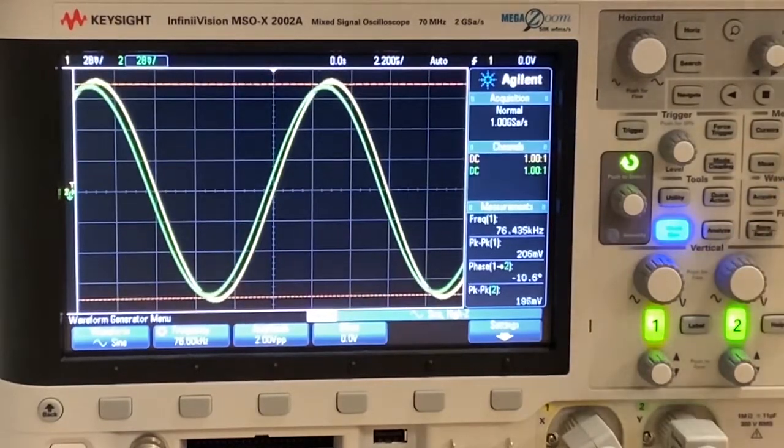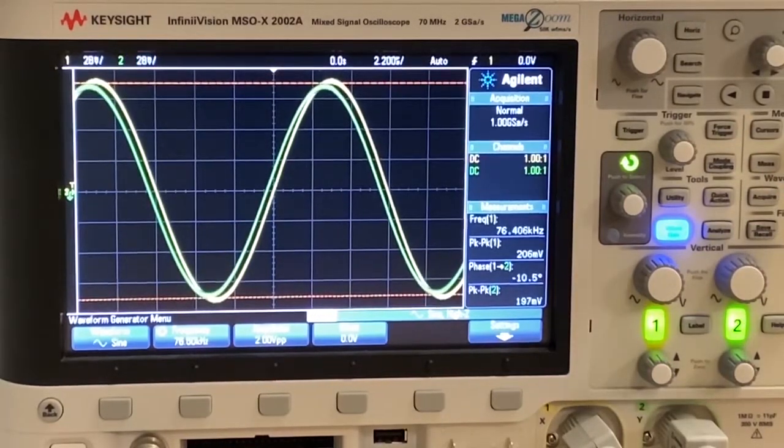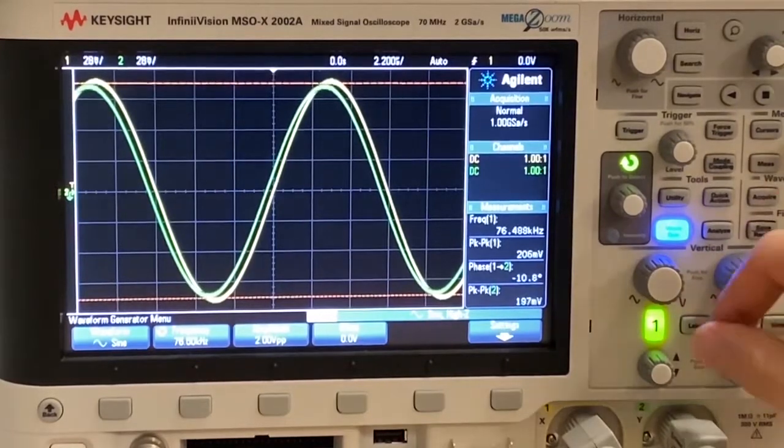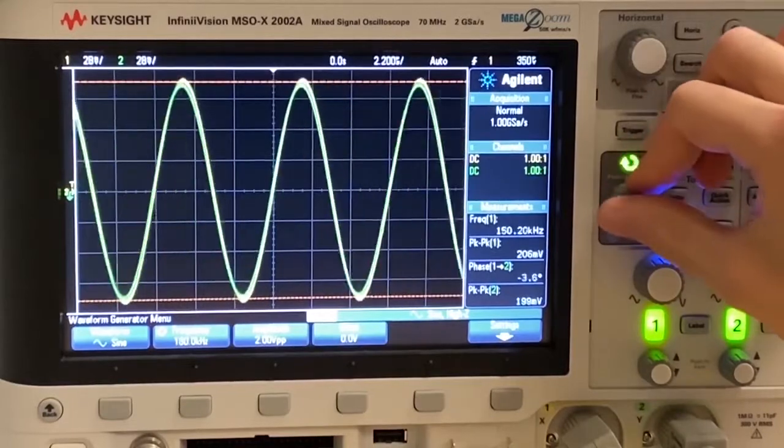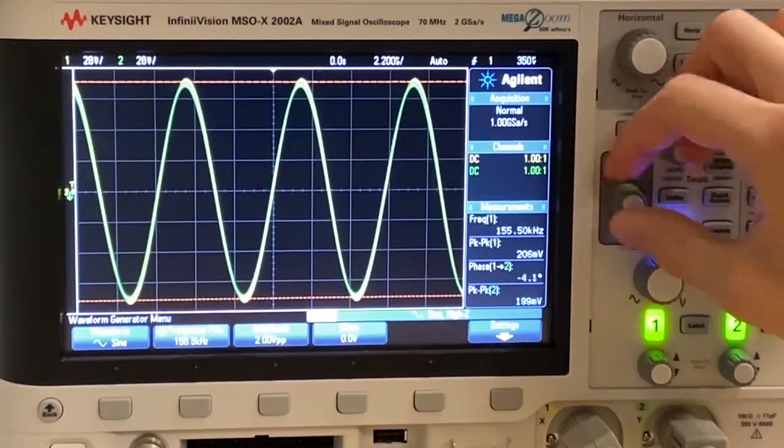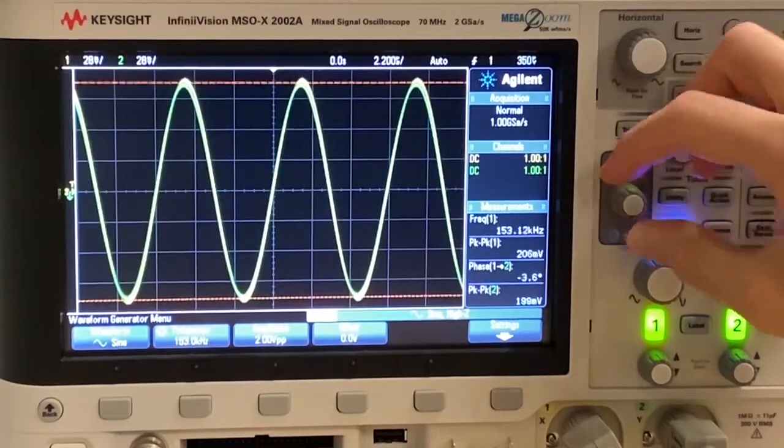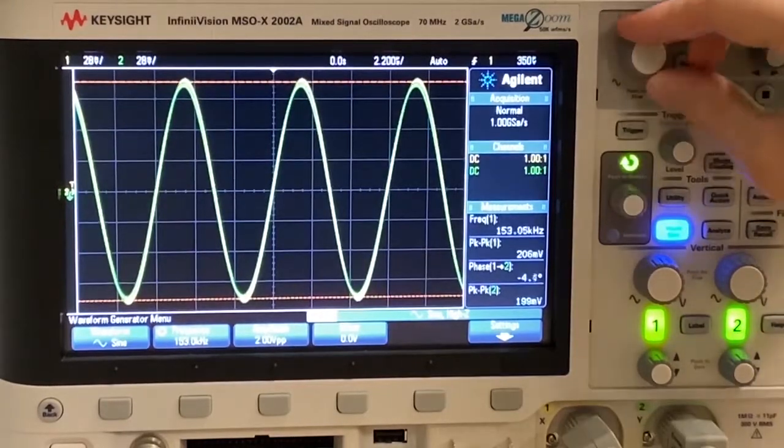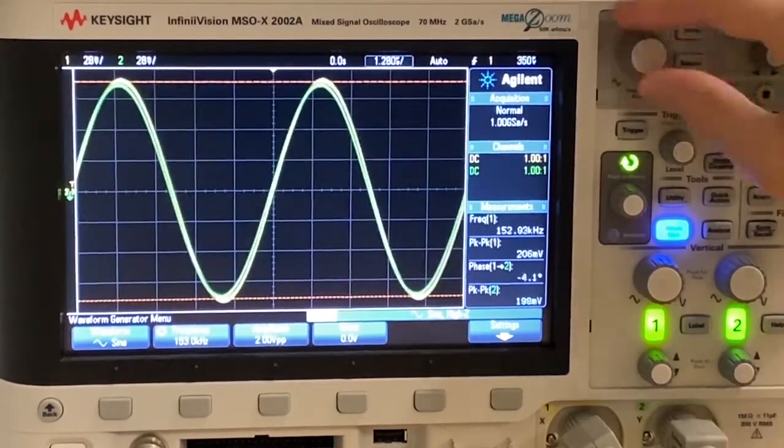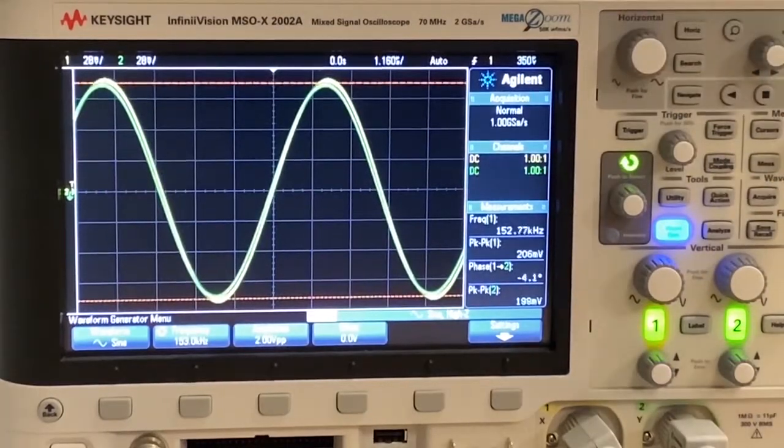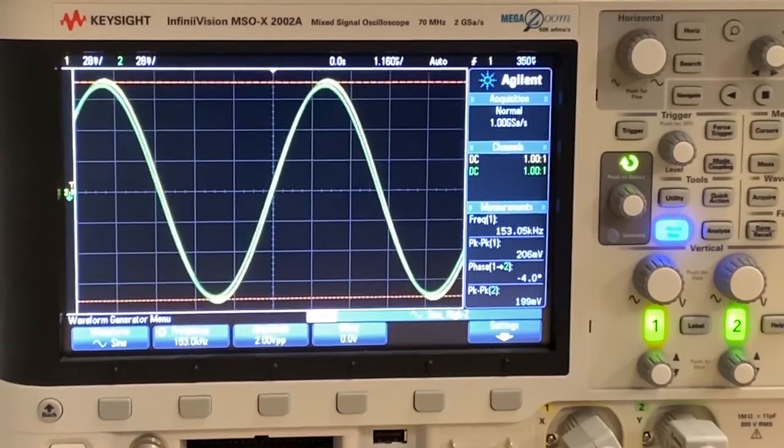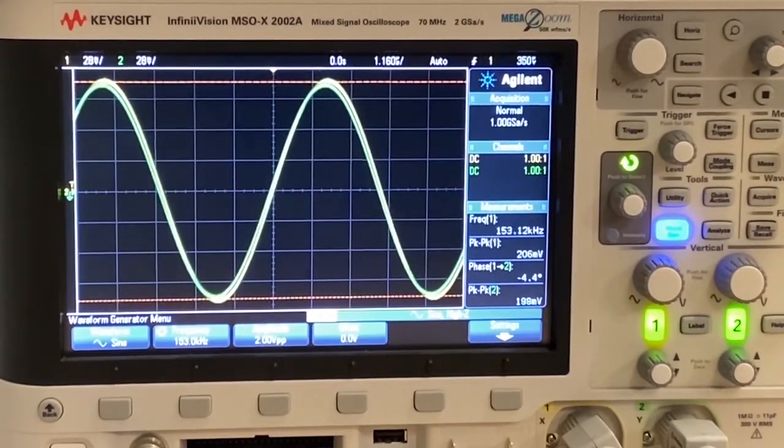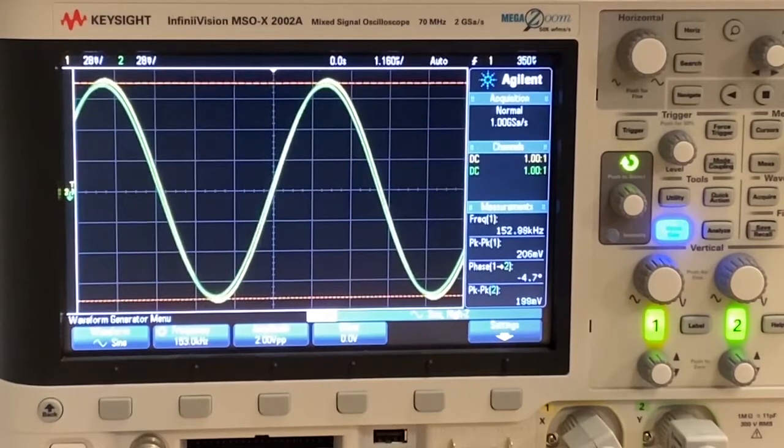And then finally, our 10 times frequency is going to be 153 kilohertz. So there's 153. And again, we'll zoom in horizontally. And we have a pretty good picture of what our peak-to-peak voltage is. All right. Those should be all the measurements that you need in order to complete lab number six.